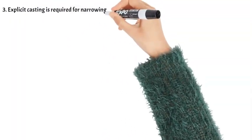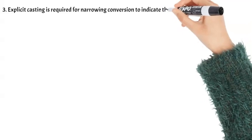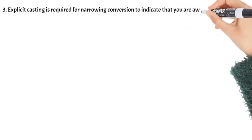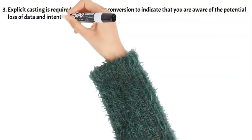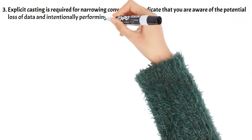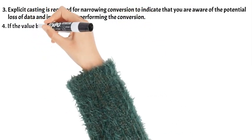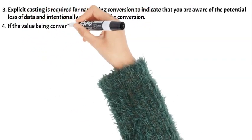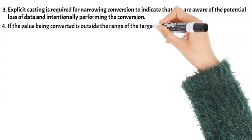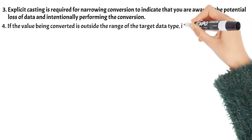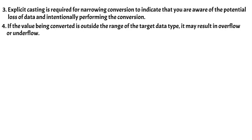Explicit casting is required for narrowing conversion to indicate that you are aware of the potential loss of data and intentionally performing the conversion. If the value being converted is outside the range of the target data type, it may result in overflow or underflow.